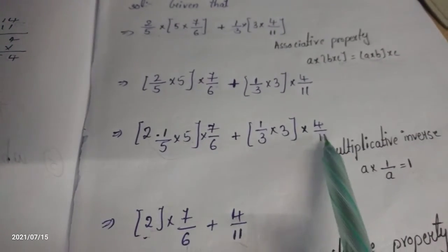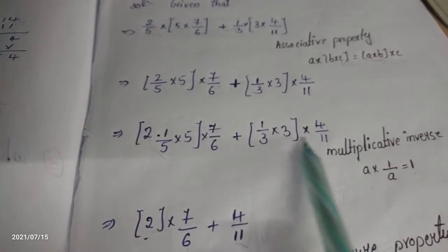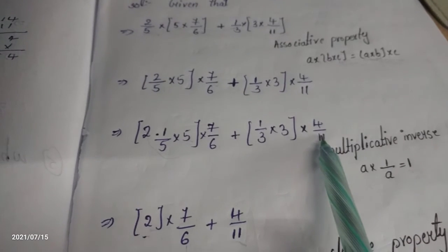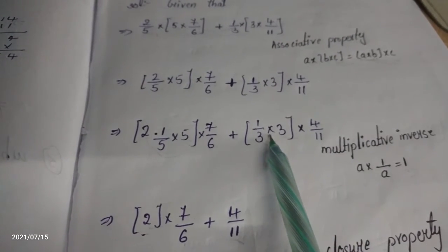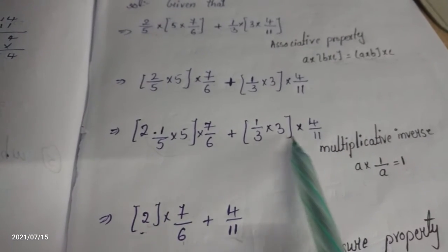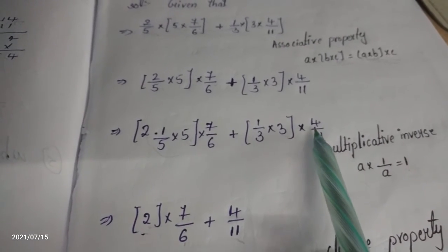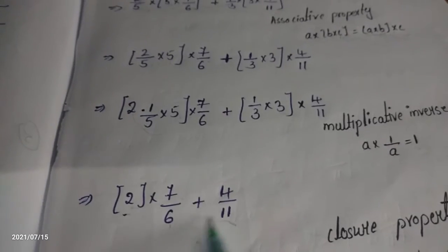One times 4 by 11 gives 4 by 11. One into 4 by 11 equals 4 by 11 only.